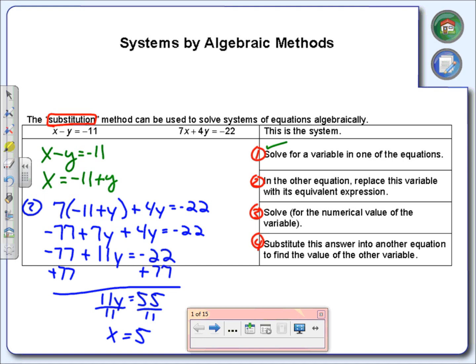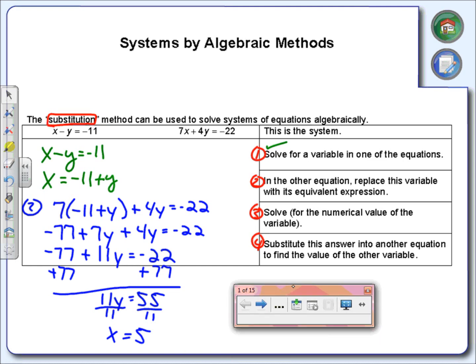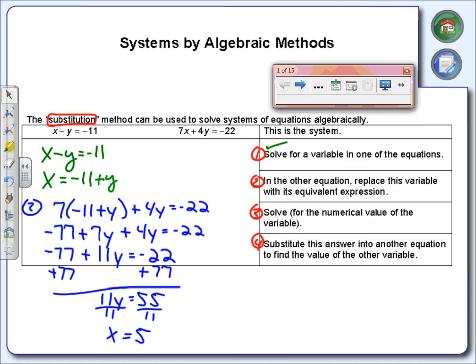Bad news is we're only halfway done. All we've found so far is the y value. We still need to figure out what the x value is. Step four says substitute the answer, which is 5 in our case, into another equation to find the value of the other variable. We can use the first equation or the second, whatever looks easier. I'm going to use the first equation. I'm going to take out y and replace it with 5.